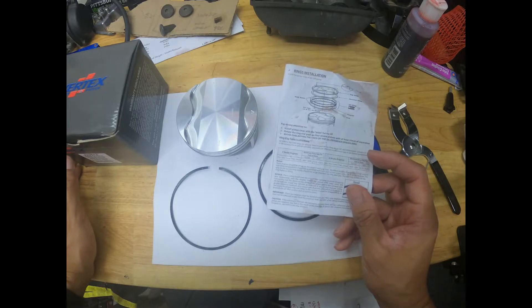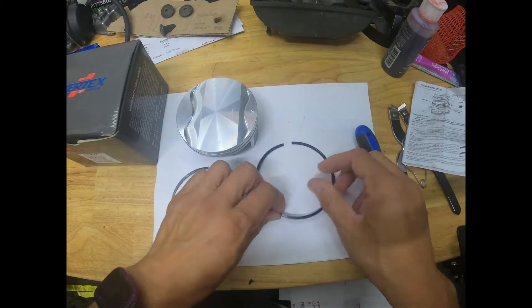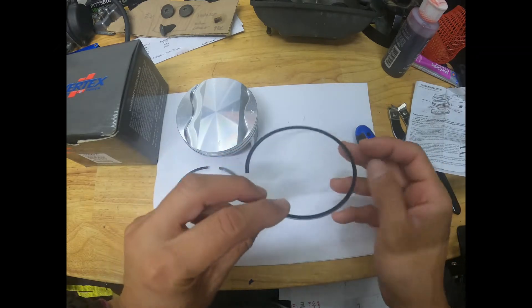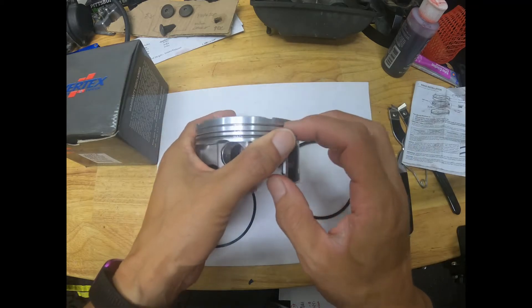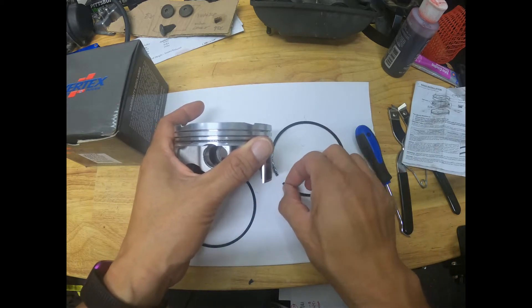Just remember that piston ring number one has a bevel, bevel facing up. You can determine that by the actual lip in the piston. The ring will fit right in and the bevel will fit perfect on that lip.